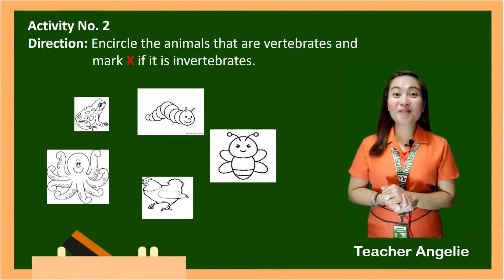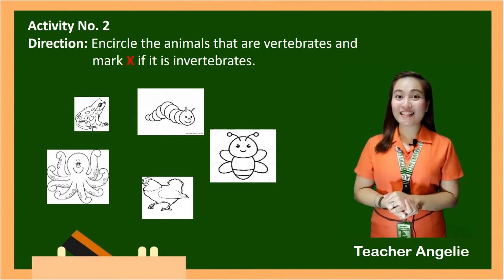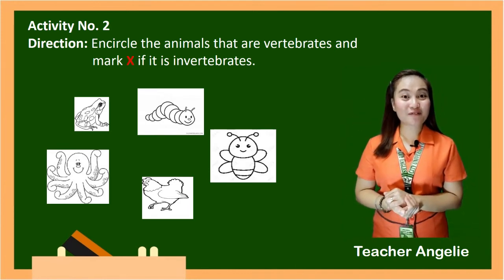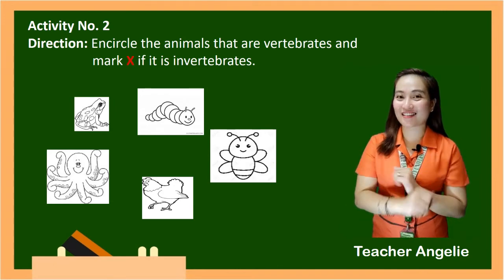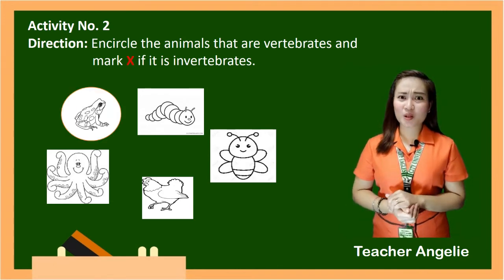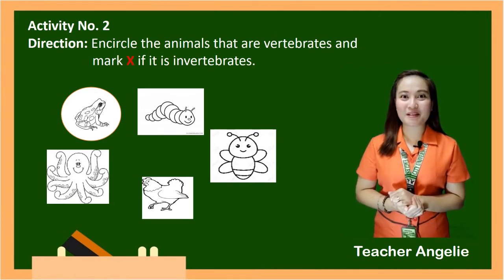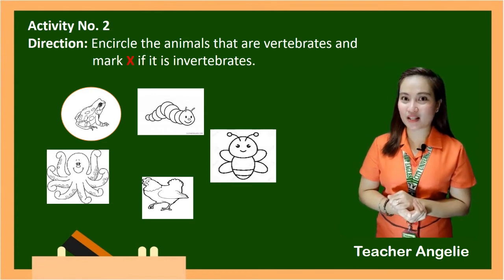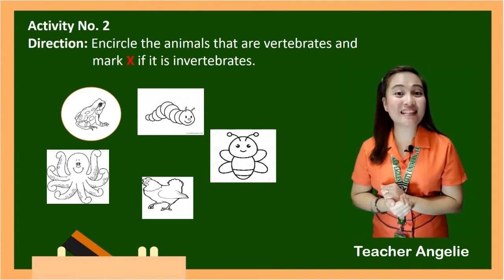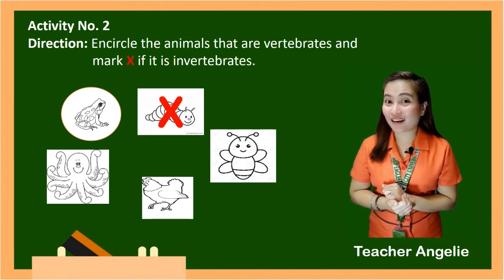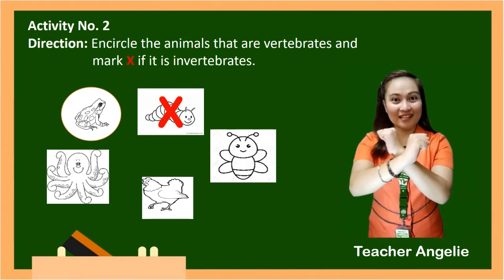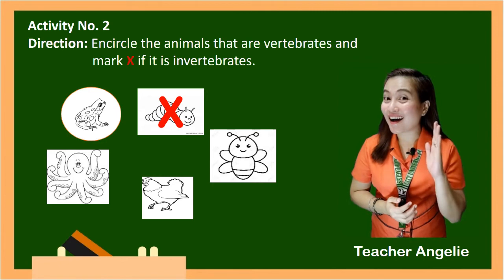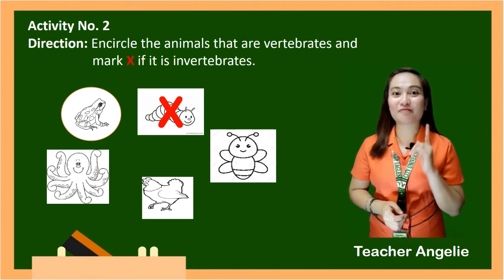Okay, time is up. Stop writing and let's answer activity number 2. Let's start first with the frog. What is your answer for the frog? Did you encircle the frog or did you mark an X? Yes, correct — it is vertebrates. And how about the caterpillar? Yes, it is X because the caterpillar doesn't have a backbone, and it is invertebrates.